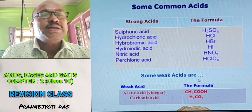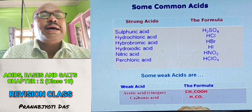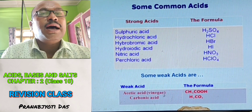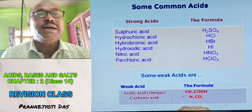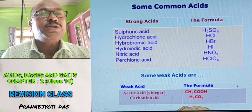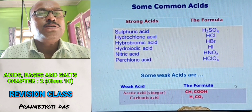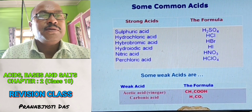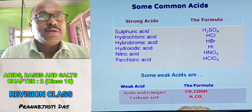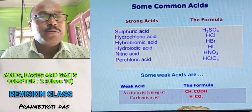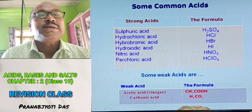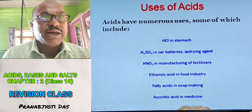Some weak acids: Acetic acid, also called vinegar, with formula CH3COOH, and Carbonic acid with formula H2CO3. So we have seen in the first list the names and formulas of some common strong acids, and in the second chart some weak acids.